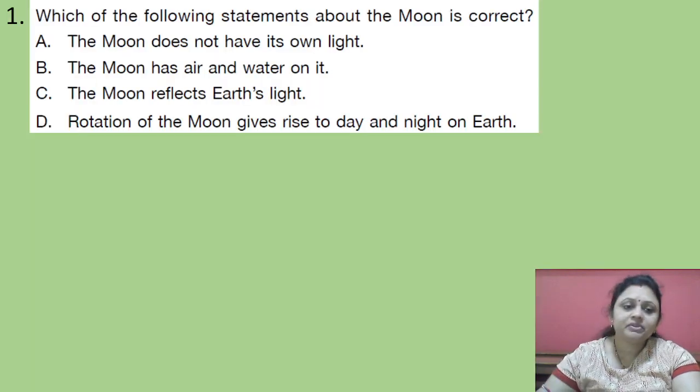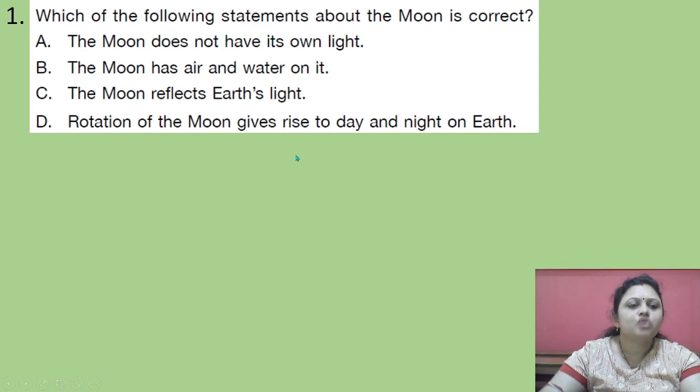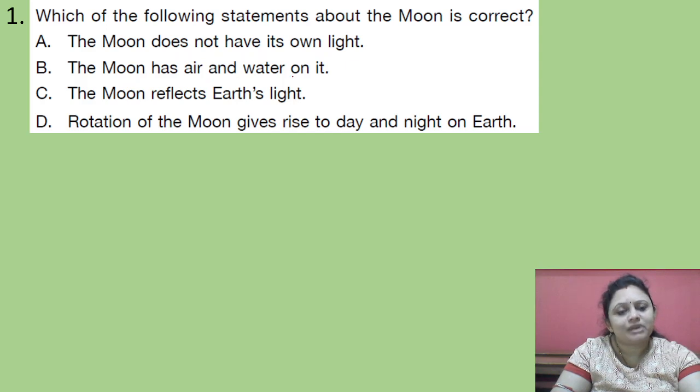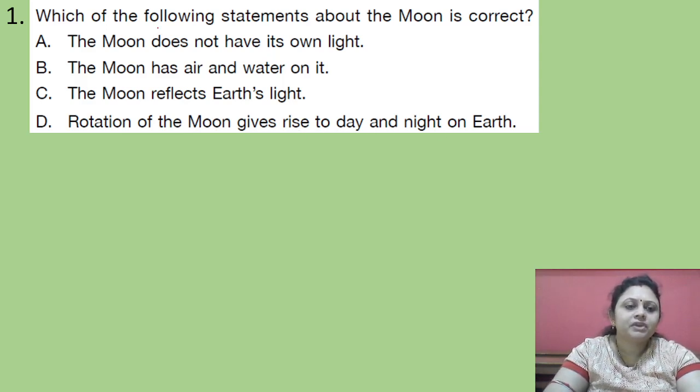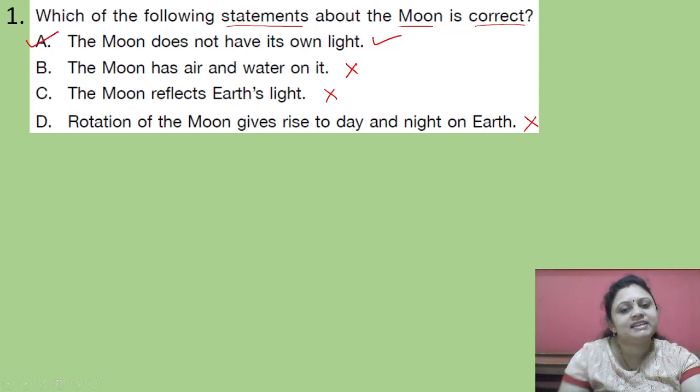Our first question, which of the following statement about the moon is correct? Options are A. The moon does not have its own light. B. The moon has air and water on it. C. The moon reflects earth's light. D. Rotation of the moon gives rise to day and night on earth. So which of the following statement about the moon is correct? The moon does not have its own light. This one is correct. So here the correct answer is option A.